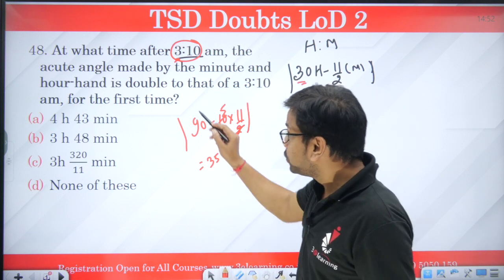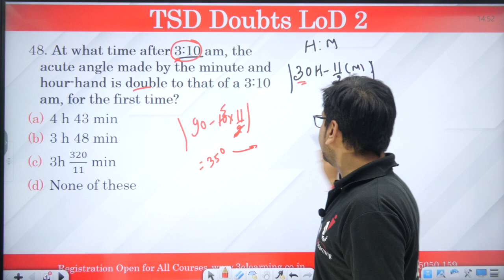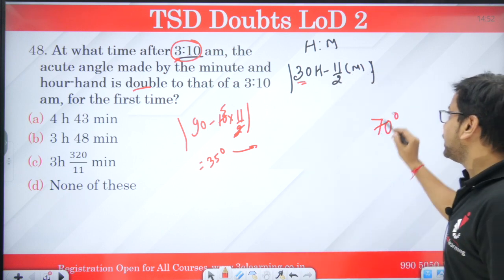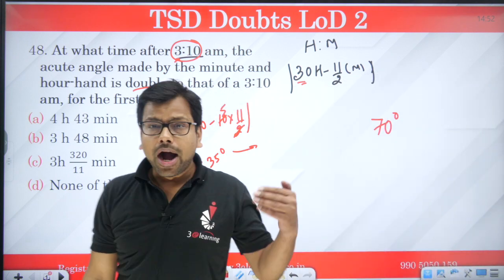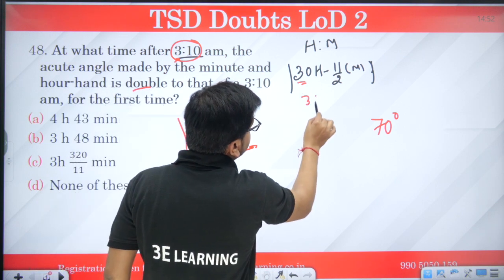Now what would be the angle you want double? So we want 70 degrees. I need 70 degrees. When do I need it? After 3:10, for the first time, time is 3h.